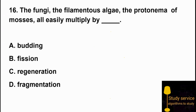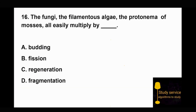Question 16: The fungi, the filamentous algae, and the protonema of mosses all easily multiply by. Option C: regeneration. Option D: fragmentation. Fragmentation is the method of multiplication for these organisms. So Option D is the right answer.